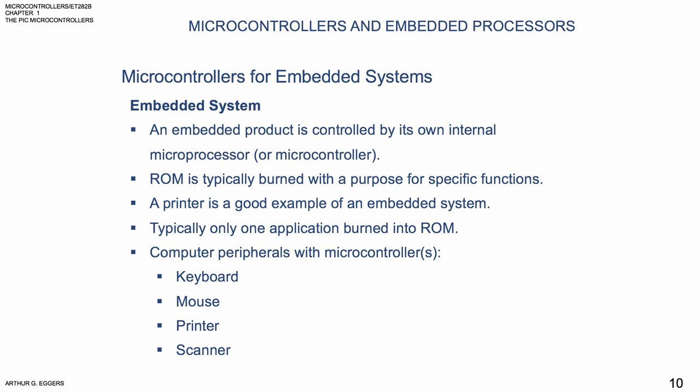With the microcontroller as an embedded system, the product is controlled by its own internal processor. RAM is usually burned into the chip with a purpose for specific functions. A printer is a good example of an embedded system — typically, only one application is burned into the ROM. Computer peripherals with microcontrollers include a keyboard, a mouse, a printer, and a scanner.